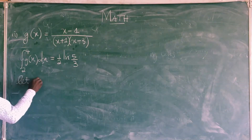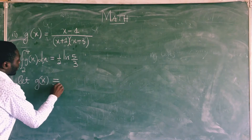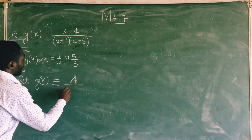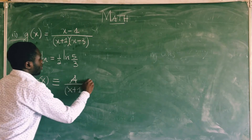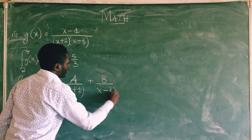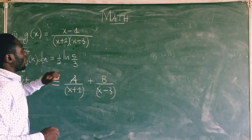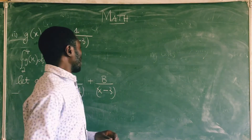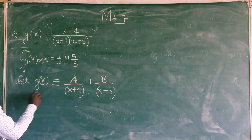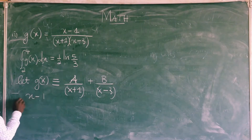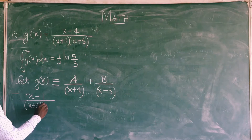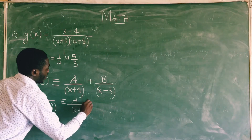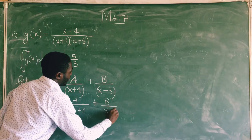The first thing we say: let g of x be equivalent to — since they are all linear functions — it is equivalent to A over x plus 1 plus B over x minus 3. And since both of them are linear functions, I can use the cover-up method in order to get the values of A and B. So remember, g of x is x minus 1 all over x plus 1 times x minus 3, equivalent to A over x plus 1 plus B over x minus 3.